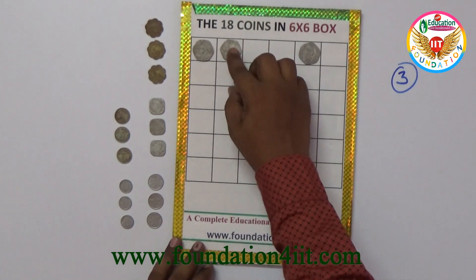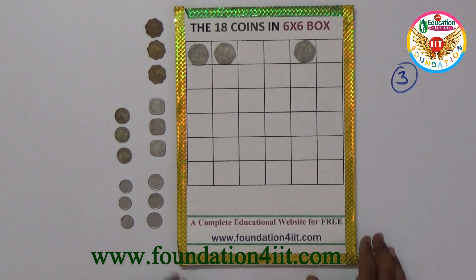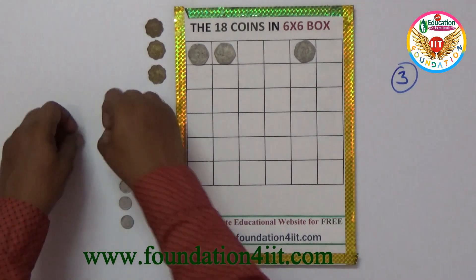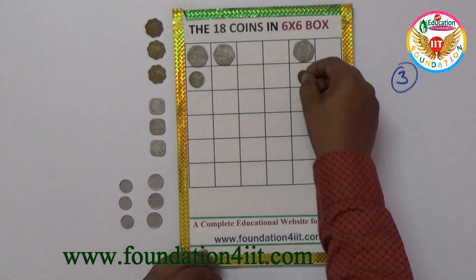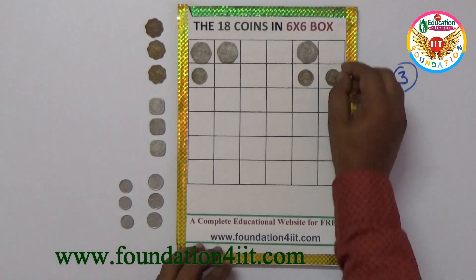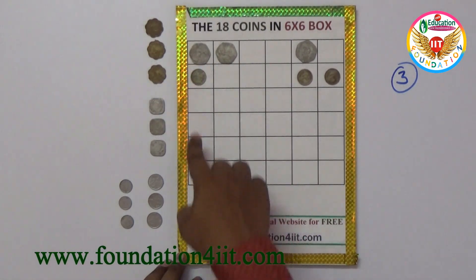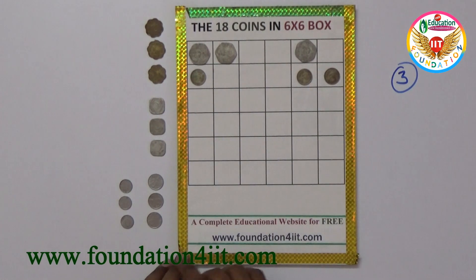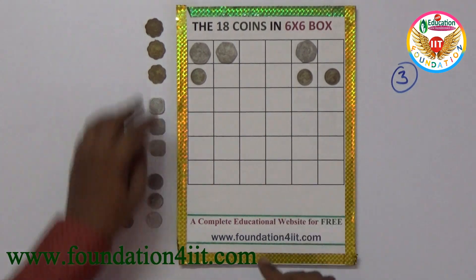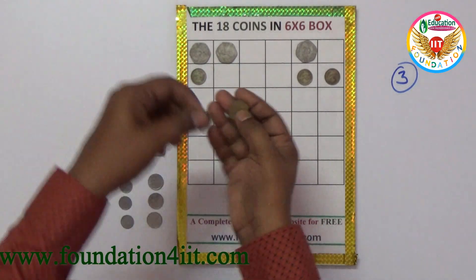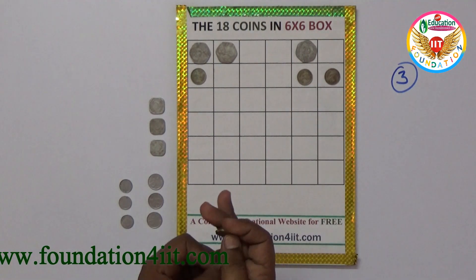In the first row I kept coins at positions 1, 2, and 5 — that's 3 coins. Every row and every column must have only 3. The first row has 3, the second row also has 3. Looking at the columns: this column already has 2, so only one more spot remains. This column is also already occupied with 2, so only one chance is left.